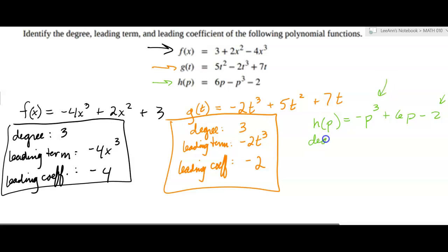Okay, so the degree is 3. The leading term is negative p cubed. And then the leading coefficient is negative 1 on that. That's the leading coefficient. Okay? All right, so hopefully that was fun.